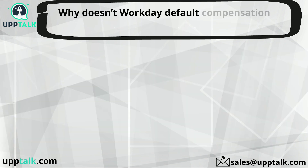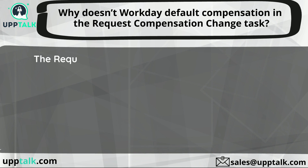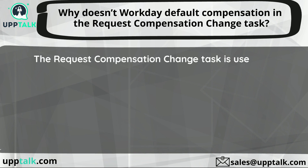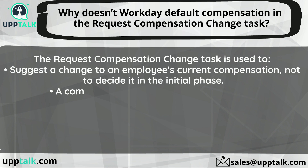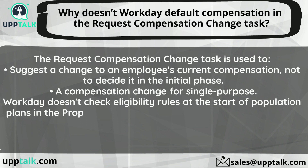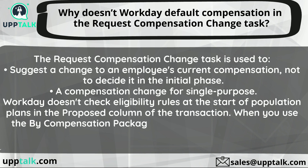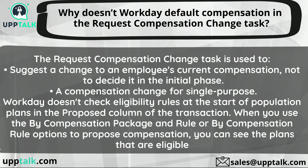Why doesn't Workday default compensation in the request compensation change task? The request compensation change task is used to suggest a change to an employee's current compensation, not to decide it in the initial phase — it is a compensation change for a single purpose. Workday doesn't check eligibility rules at the start to populate plans in the proposed column. When you use the 'by compensation package and rule' or 'by compensation rule' options to propose compensation, you can see the eligible plans.